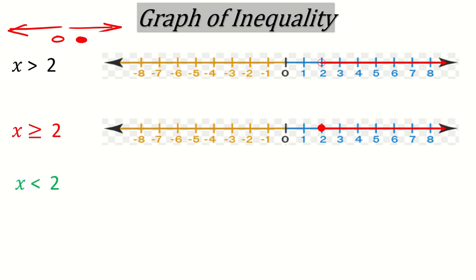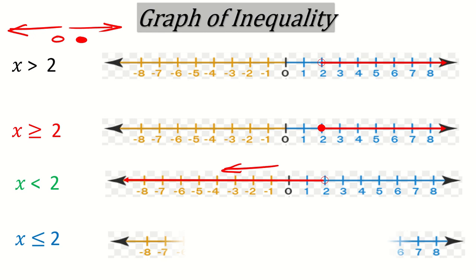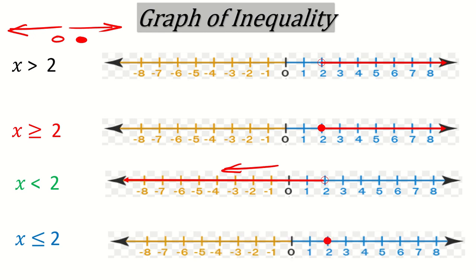Now, x is less than 2. Less than 2 means 2 is the number — only a blank circle without color, because there is no equal to sign — and then less than means it will go towards the left. And then for x less than or equal to 2, the same picture but with a colored circle, and then it will go to the left.